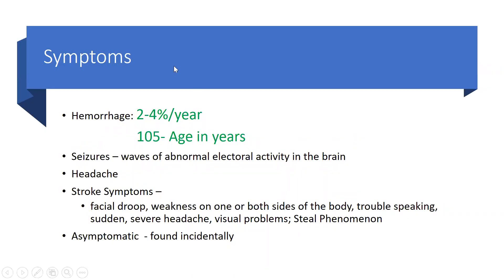When you have an AVM, what are the symptoms you can have? Hemorrhage, seizures, headaches, stroke-like symptoms, or you may be asymptomatic. Pretty much about 80 to 90 percent of the symptoms happen in those three categories: hemorrhage, seizures, and headaches. Those are the three main reasons an AVM comes to my attention.